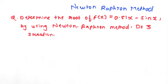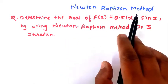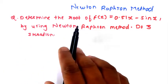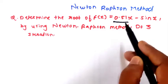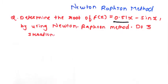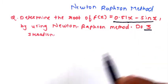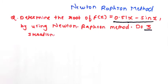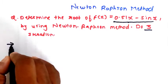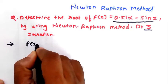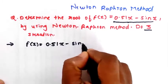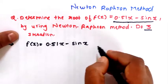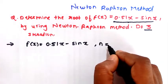Hello everyone. In this video we are going to solve a numerical of the Newton-Raphson method. The problem is to determine the root of the equation f(x) = 0.51x − sin(x) using the Newton-Raphson method. We have to take three iterations, so n = 3.